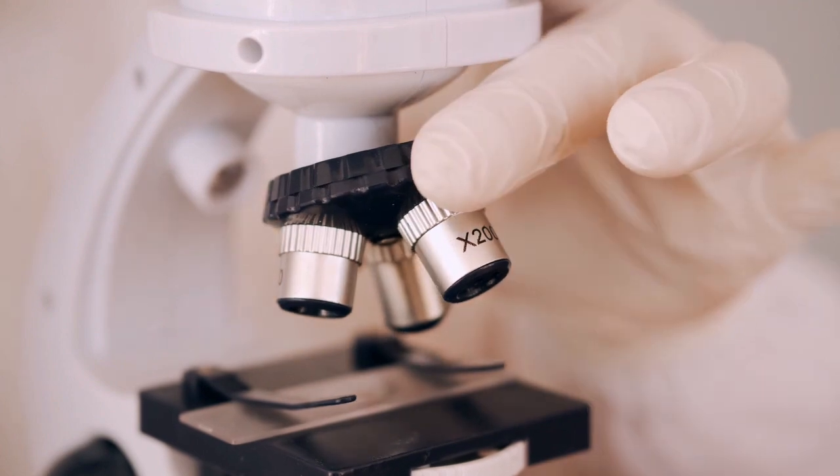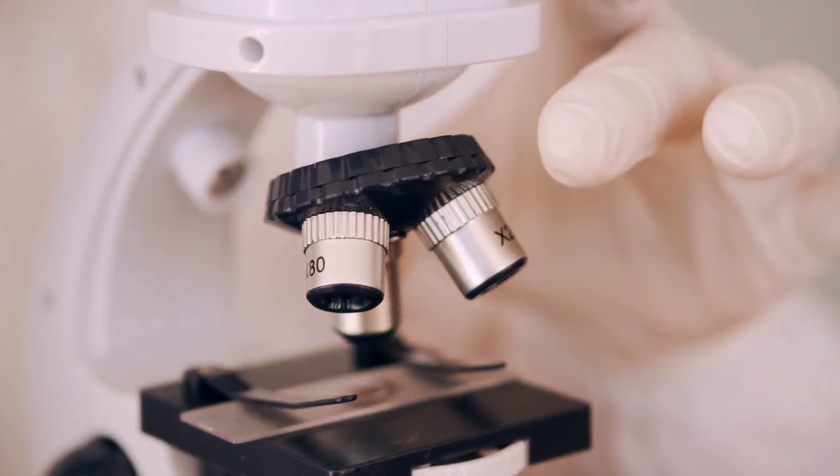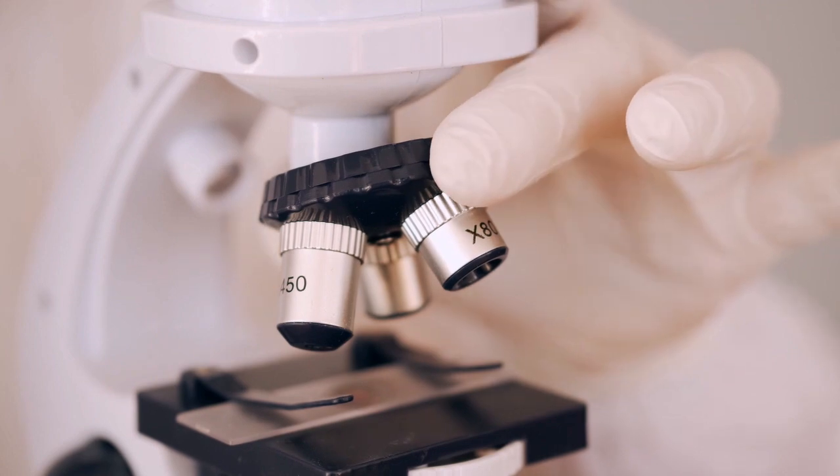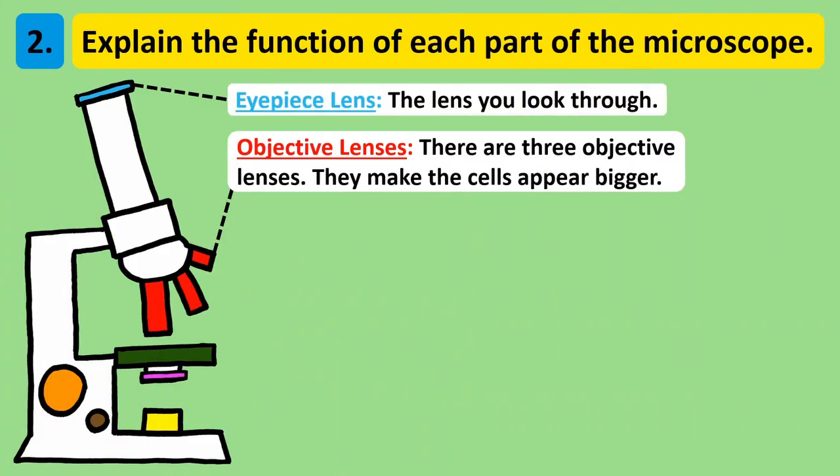The other lens that magnifies cells are the objective lenses. Most school microscopes are equipped with three objective lenses, so you can switch between any of these three objective lenses when you are viewing cells. Each of these objective lenses have a different power, meaning one lens will zoom in closer to a cell than the other objective lenses. On this microscope on screen, the lowest powered objective lens has a times 10 magnification. This means that this objective lens makes cells appear 10 times larger than they are in reality. The medium powered objective lens has a times 20 magnification, and the high powered objective lens has a times 40 magnification.